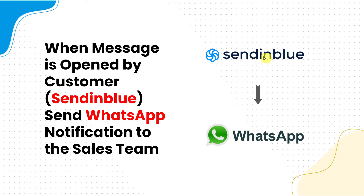Whenever the message is read by the customer, automatically a WhatsApp notification is received by the sales team. In this integration we are using Sendinblue, which is an email marketing platform. In place of Sendinblue we can even use MailChimp, MailerLite, MailerCloud, or any other email marketing platform, so the sales team gets a WhatsApp notification on their mobile number. We will be learning how to create this integration in the further steps of the video.